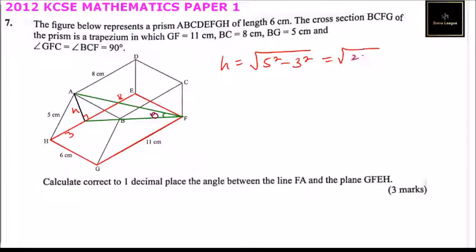So height is equal to the square root of five squared minus three squared, which gives us square root of 25 minus 9, which is square root of 16, equals 4. So our height here is 4.